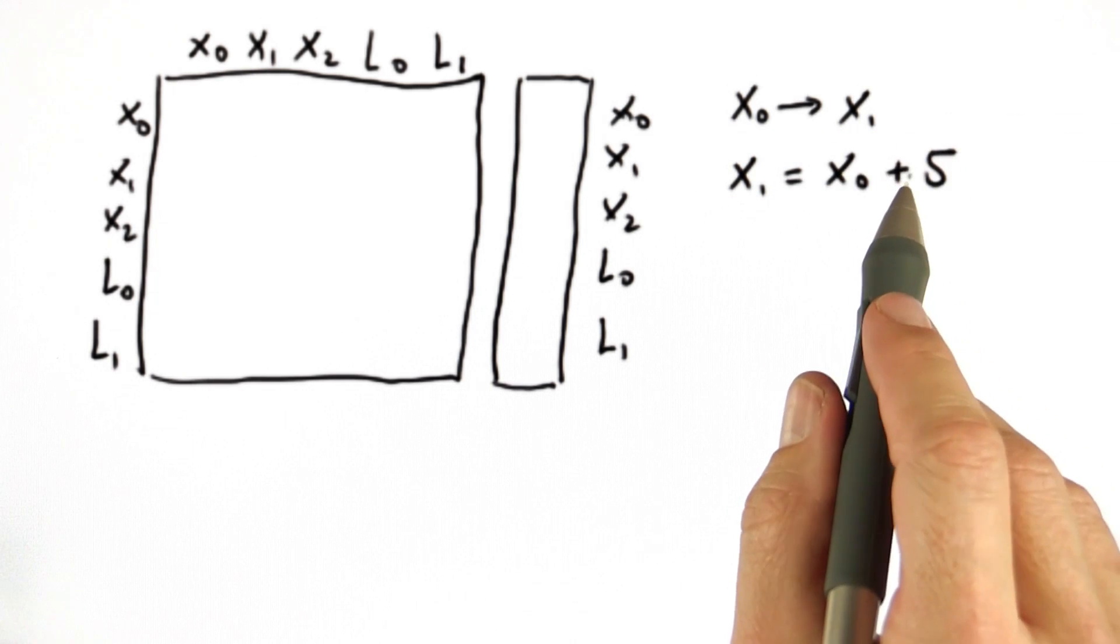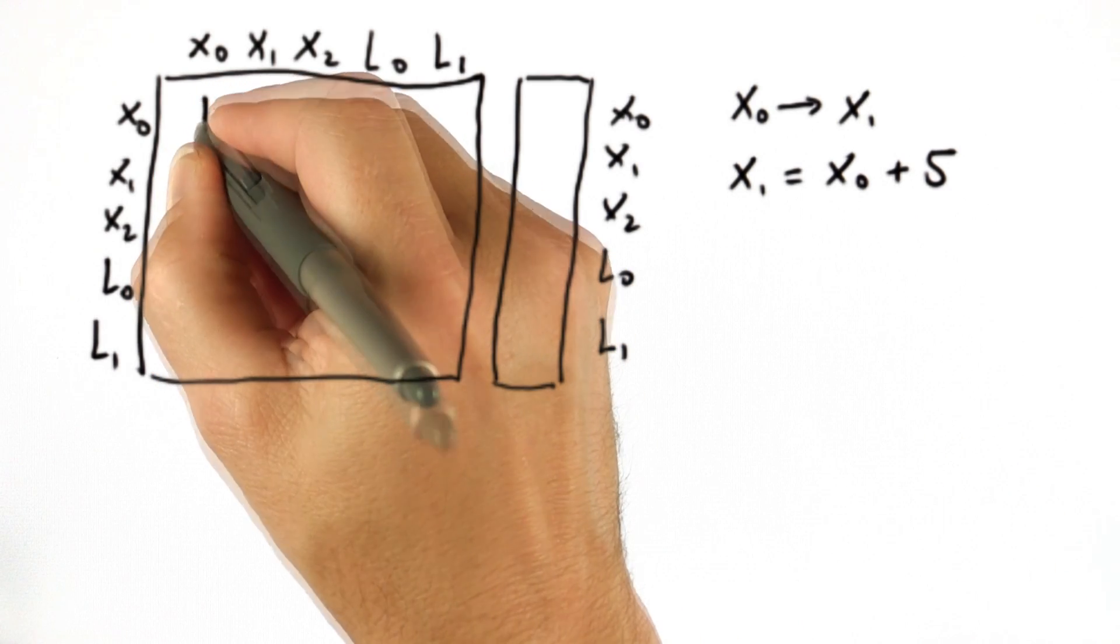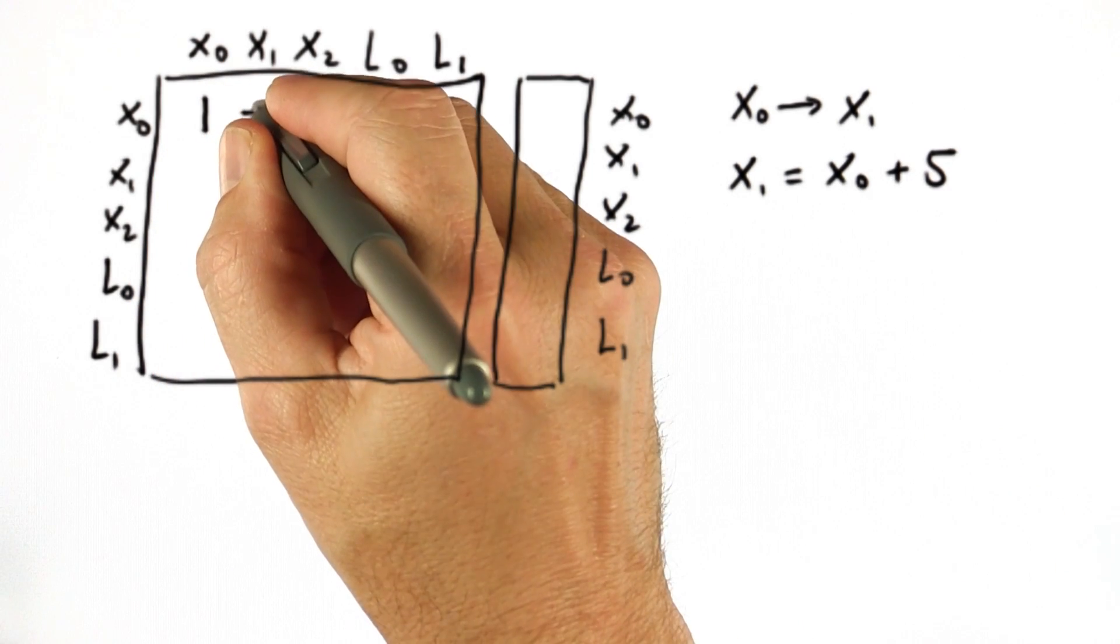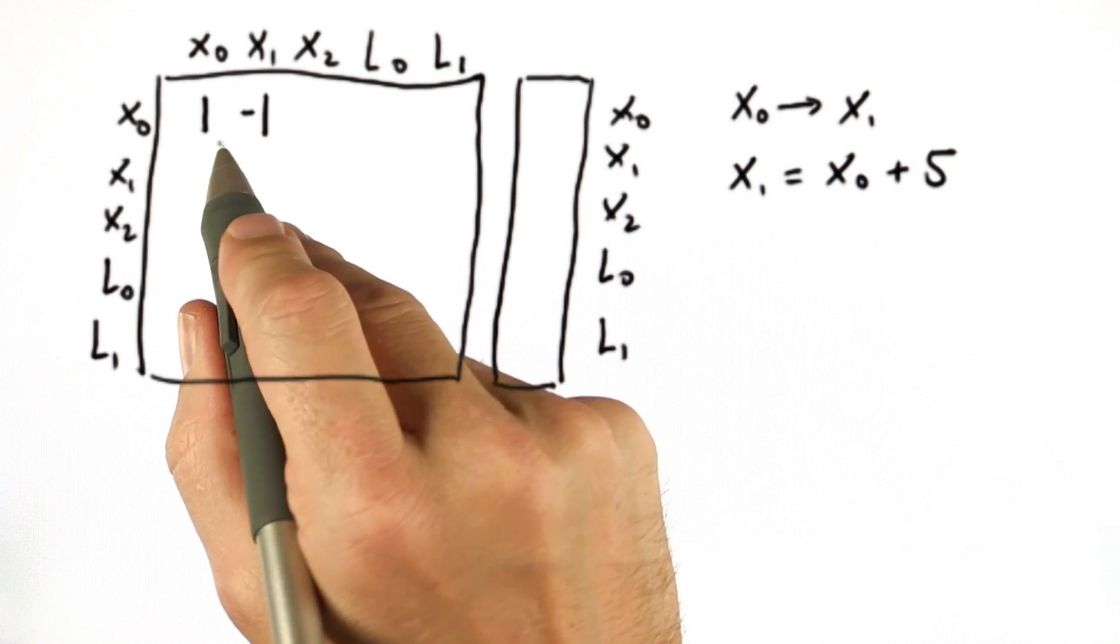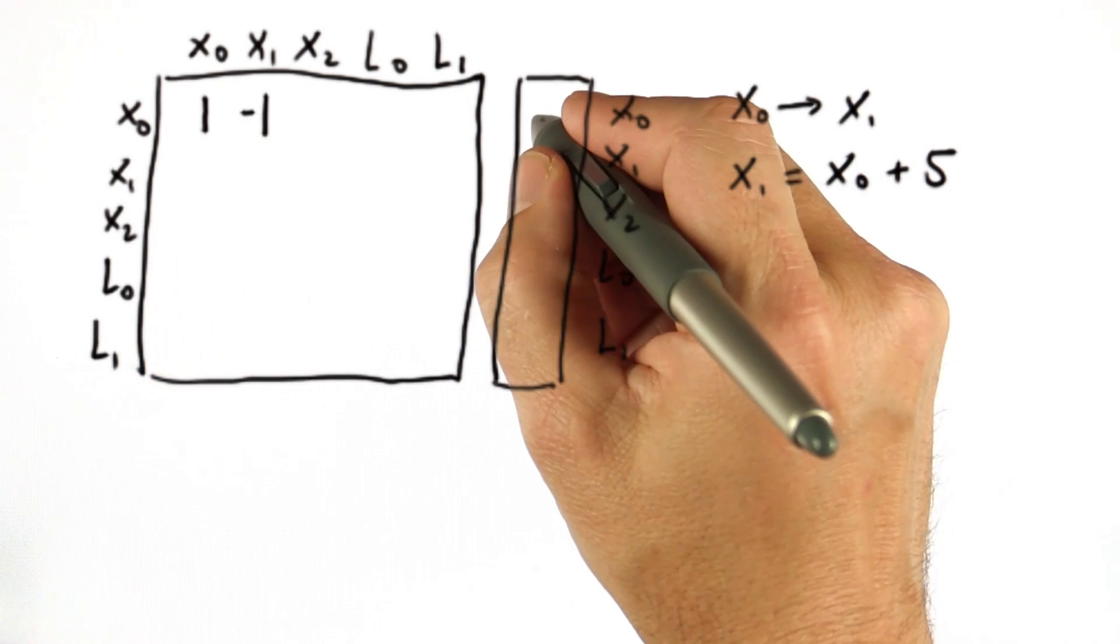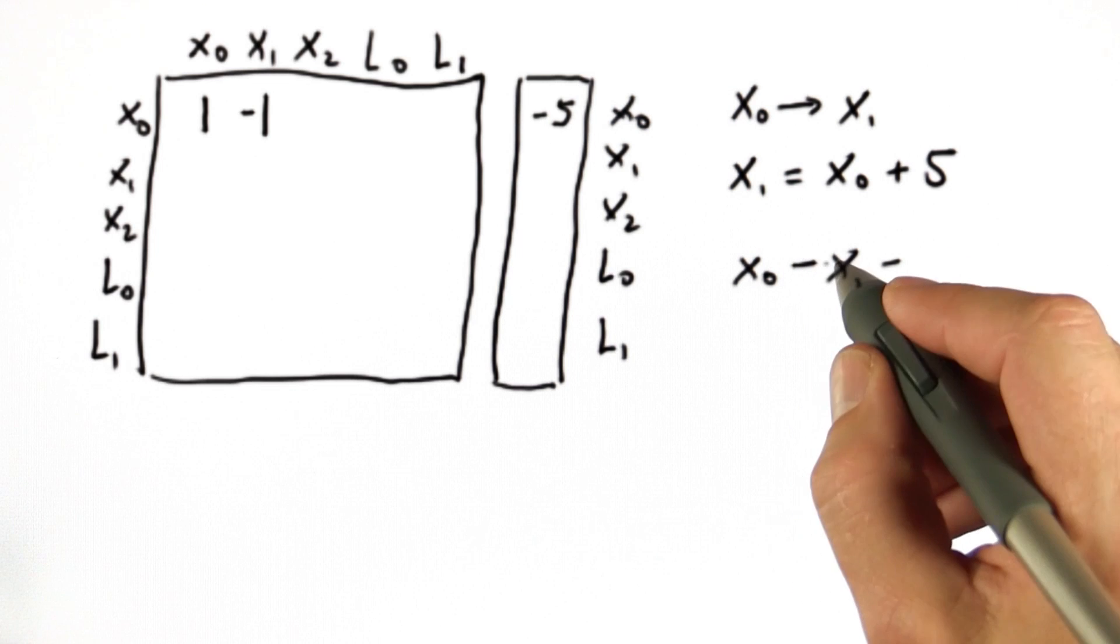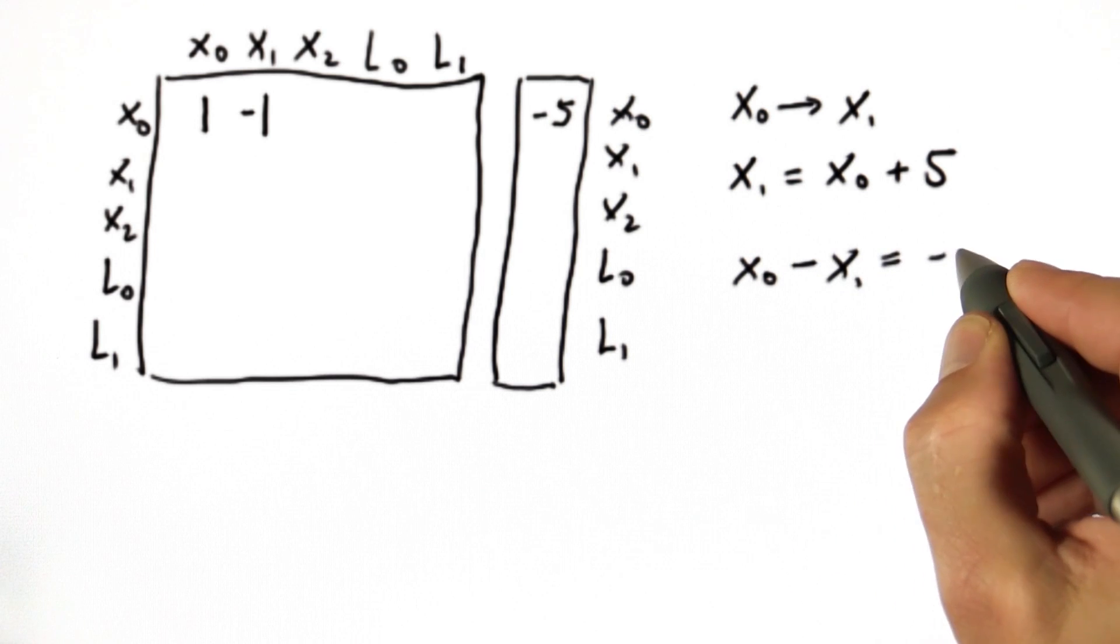The way we enter this into the matrix is in two ways. First, one x0 minus one x1 added together should be, well, minus 5. So we look in the equation here, x0 minus x1 equals minus 5.